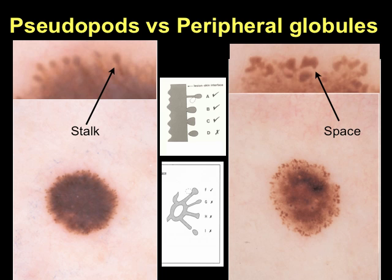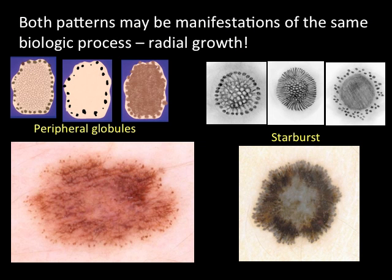It is important to differentiate pseudopods from peripheral globules. The bulbous end of a pseudopod is connected to the main tumor mass via a stalk, as seen in the lesion on the left. In the schematic, structures labeled G and H are not considered pseudopods since the width of the bulbous ending is not at least twice that of the stalk. Peripheral globules, on the other hand, have no stalk but instead have a space separating the globule from the main tumor mass. It appears that peripheral globules and streaks are manifestations of the same biologic process — namely radial growth.